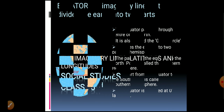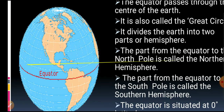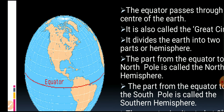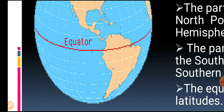First, we will learn about the equator. The equator is an imaginary line that divides the Earth into two parts. As we can see in the image, there is a red line drawn on it — that is the equator. The part from the equator towards the north is called the Northern Hemisphere.